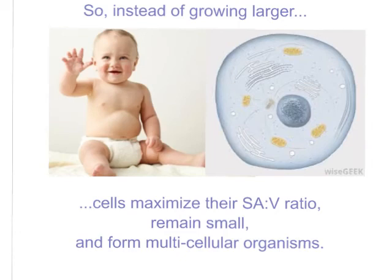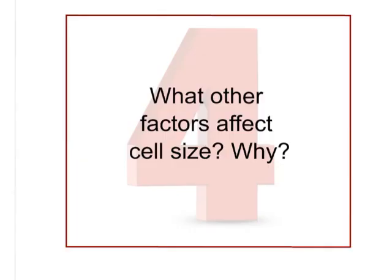And what does this ultimately mean for our cells? Well, instead of growing larger and becoming one very giant organism, cells maximize their surface area to volume ratio, just as we saw in the last slide. They stay small, and they form multicellular organisms. And that is the answer to our initial question of why are cells small? If you'd like to think about some more things here related to this topic, consider what other factors might affect cell size and why. And I look forward to seeing you in class.